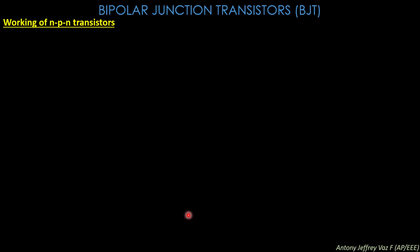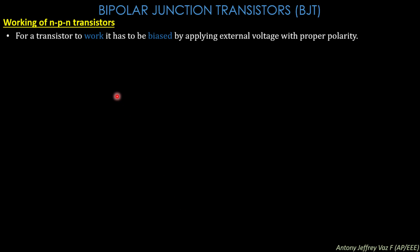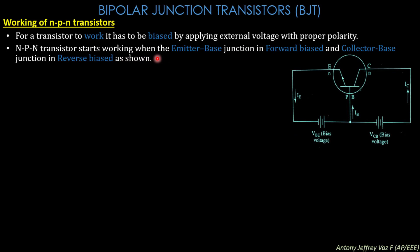Next we are going to see about the working of NPN transistors. For a transistor to work, it has to be biased by applying external voltage with proper polarities. The NPN transistor starts working when the emitter-base junction is forward biased and the collector-base junction is reverse biased. The emitter arrowhead points outward, with the emitter and collector on opposite sides and the base as the remaining terminal.